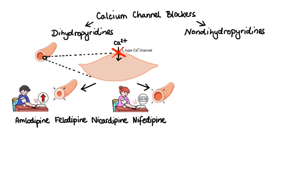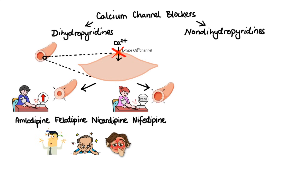When it comes to side effects of dihydropyridines, they are related to systemic vasodilation. So you can expect dizziness, headache, flushing, and peripheral edema. Another side effect that may occur with this class is swelling of the gums, also known as gingival hyperplasia.